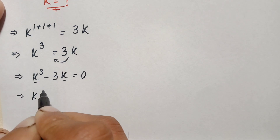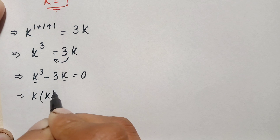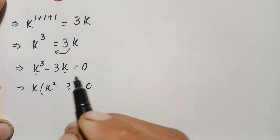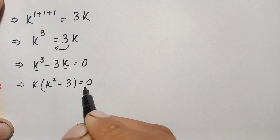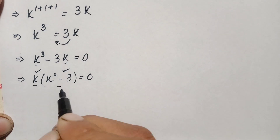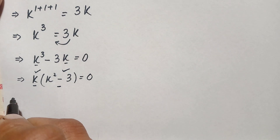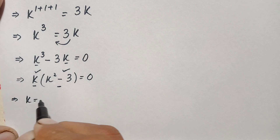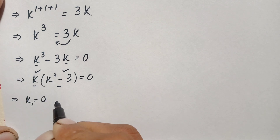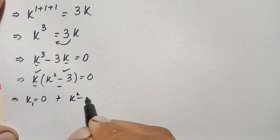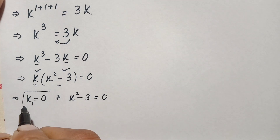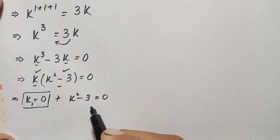Taking k common from the left hand side, k squared minus 3 remains. So we have k times (k squared minus 3) equals zero. Since the product of these two expressions is zero, either k equals zero or the quadratic k squared minus 3 equals zero. The first solution is k₁ equals zero, which is the obvious solution.